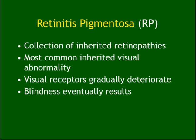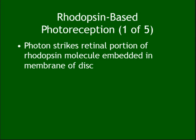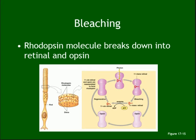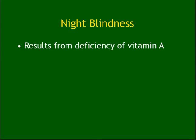Retinitis pigmentosa is pigmented inflammation of the retina; it can lead to blindness — it is very progressive and aggressive. Bleaching is when rhodopsin breaks down into retinol and opsin; then it will replenish and come back together again. Night blindness is a deficiency of vitamin A — you can't see at night.